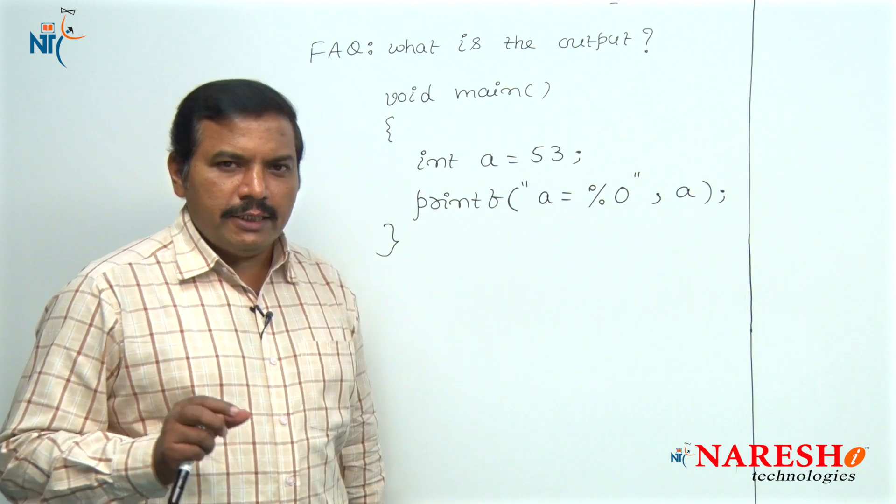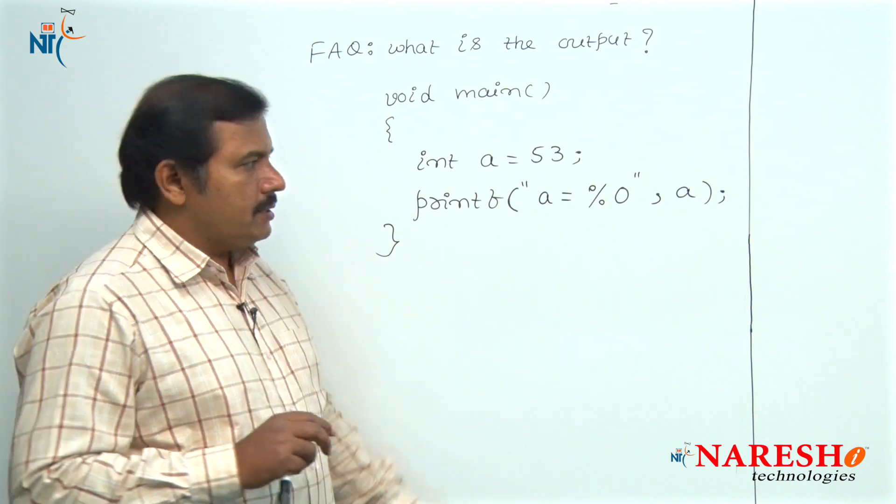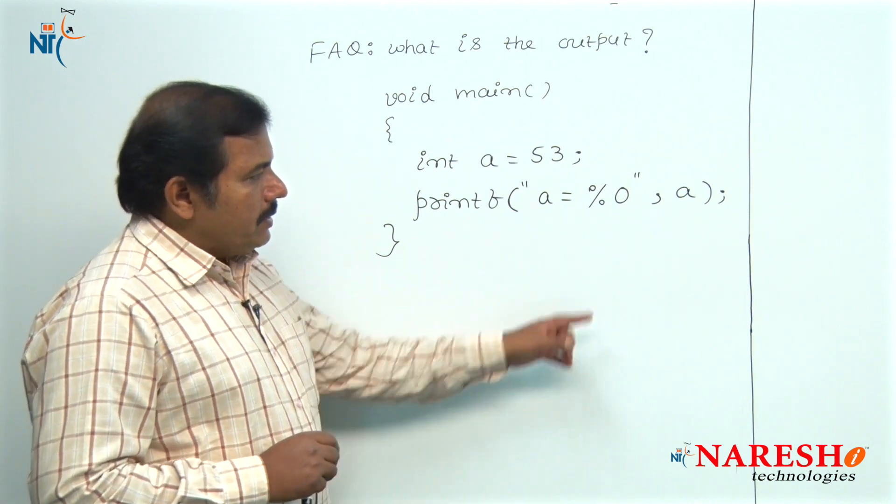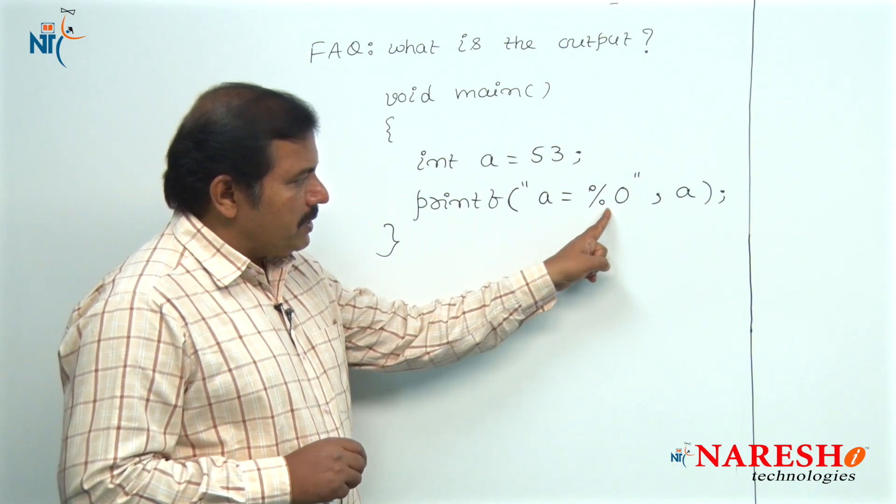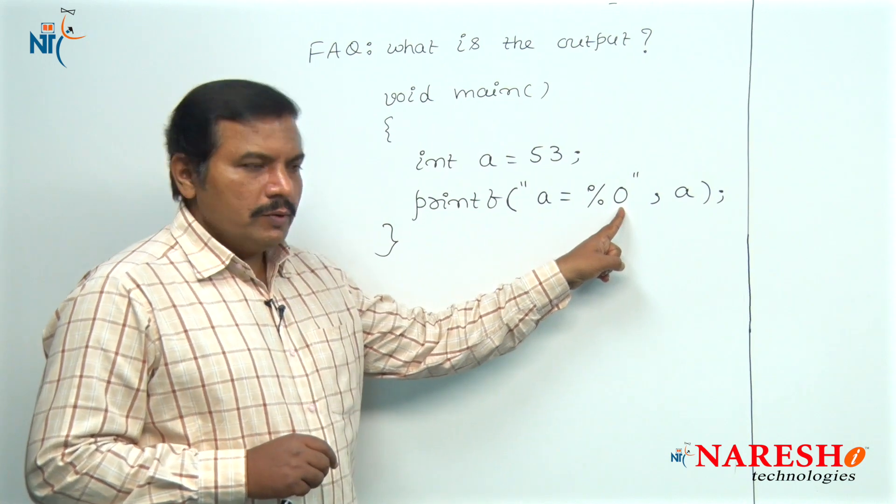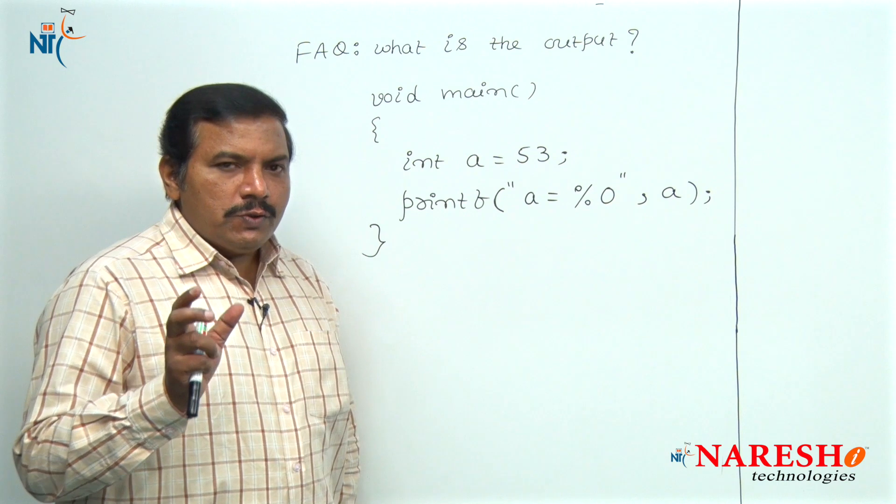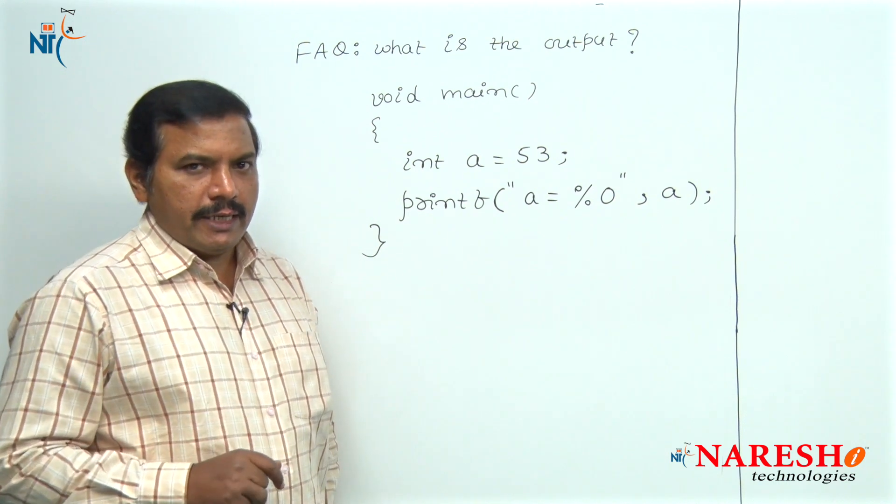Particularly, this integer constant is known as decimal integer constant. And as well as in this code, the format specifier O is used to display octal integer constants.